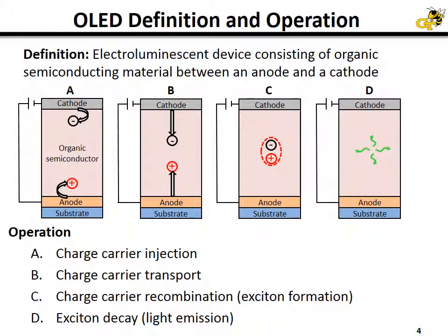What is an organic light-emitting diode, and how do they work? An organic light-emitting diode is an electroluminescent device that consists of organic semiconducting material placed between two electrodes — an anode and a cathode. Their operation can be described by four high-level steps, as shown in the diagram. The first step is carrier injection, where electrons are injected from the cathode and holes are injected from the anode. The second step is that under the influence of an electric field, these charges migrate toward the center of the organic material between the two electrodes.